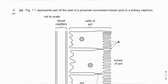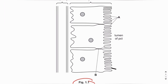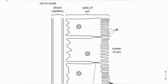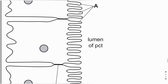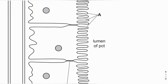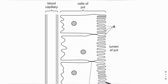Let's move on to question number three, part A. Figure 1.1 represents part of the wall of the proximal convoluted tubule, or PCT, in a kidney nephron. As you can see in figure 1.1, this shows the cells of the proximal convoluted tubule, the lumen of the PCT, and a blood capillary that runs along the PCT cells.